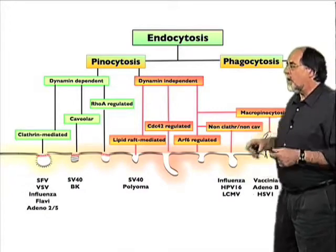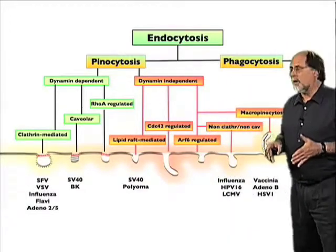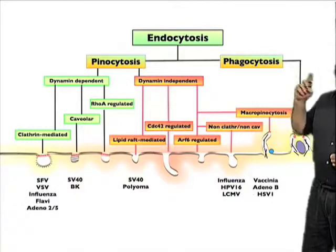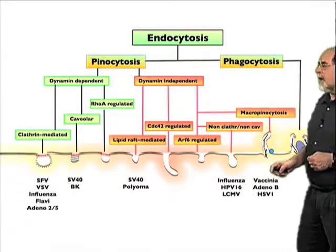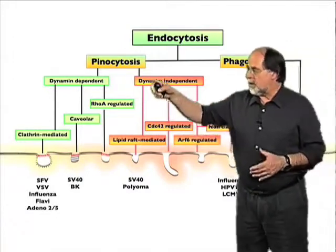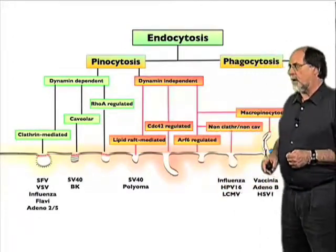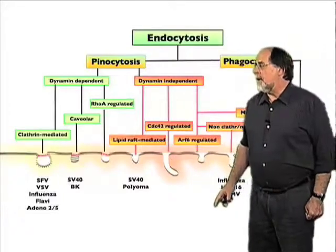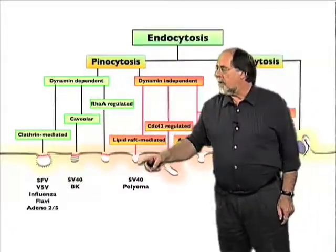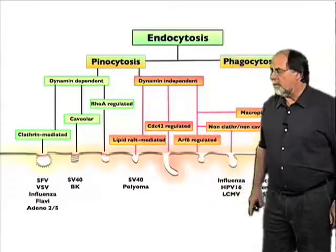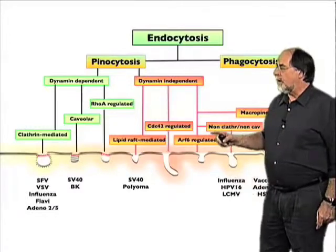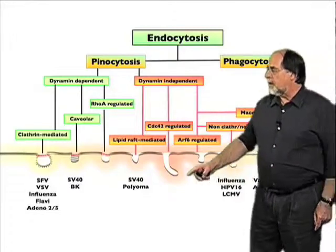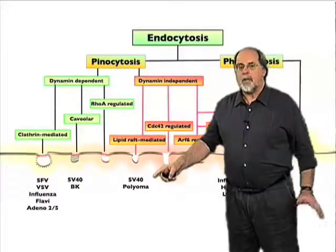Looking at all the other forms of endocytosis, classification becomes a problem. The main classification divides phagocytic uptake — particle uptake, an actin-dependent process — from pinocytosis, which is the uptake of fluid, solutes, and small particles. Pinocytosis has a wide spectrum of mechanisms, some involving caveolae and other diagnostic features. We are starting to know which of these pathways contain viral ligands and which viruses use which type of endocytic process.